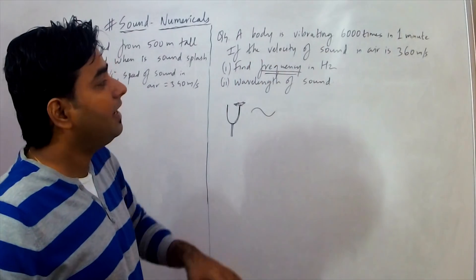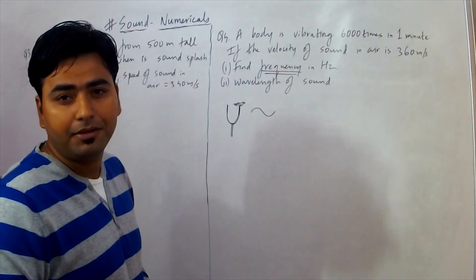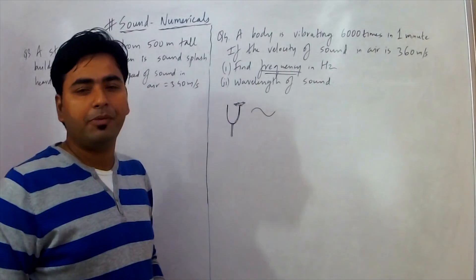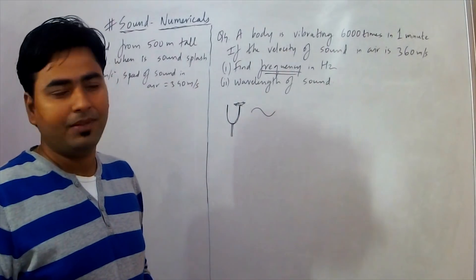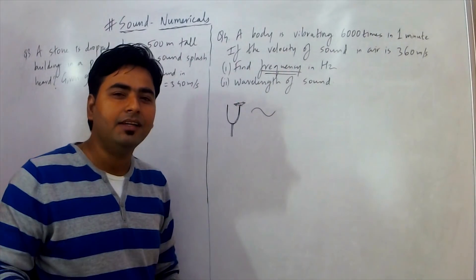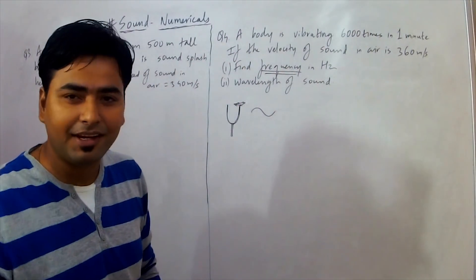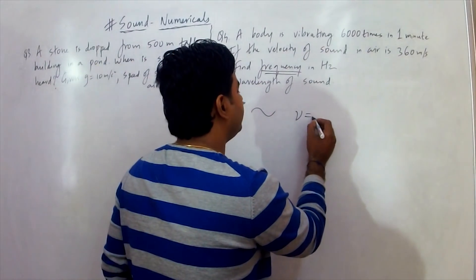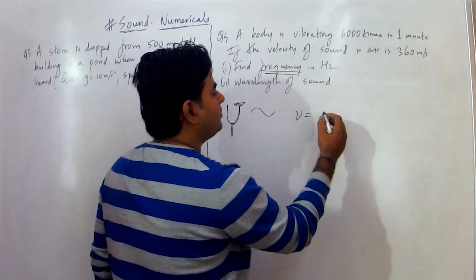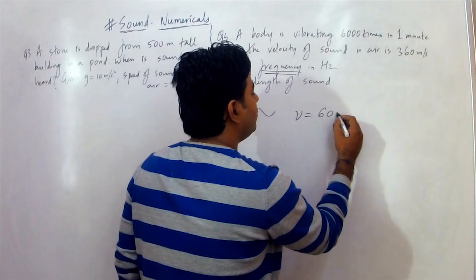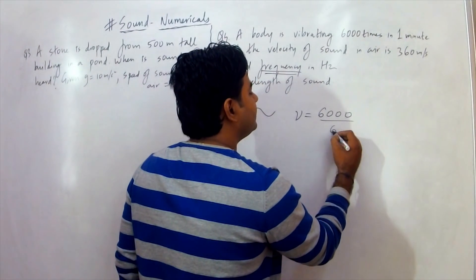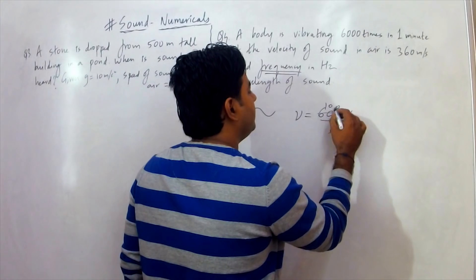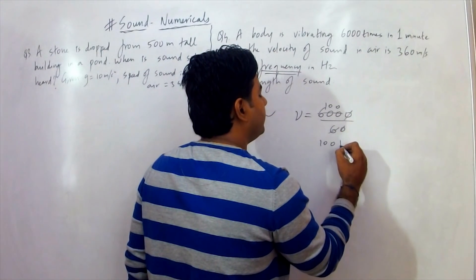The body produces 6,000 waves in a minute. To find frequency, we need waves per second. So we divide 6,000 by 60, which gives us 100 waves per second. So the frequency is 100 Hz.